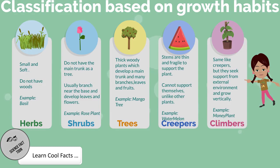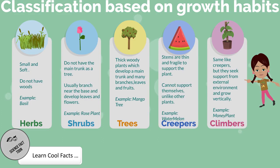Trees: Thick woody plants that develop a main trunk, branches, leaves, and fruits. Example: mango tree. Creepers: Stems are thin and fragile to support the plant. Cannot support themselves and they creep onto the ground. Example: watermelon. Climbers: Same as creepers, but seek support from the external environment and grow vertical. Example: money plant.